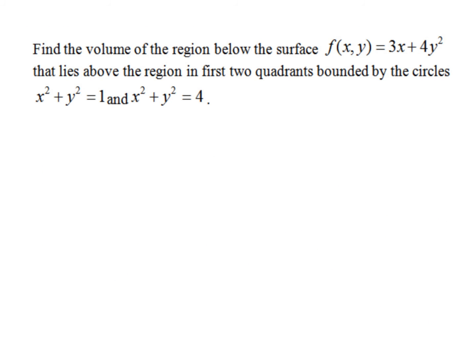Let's set up one more. All right. So we're going to find the volume that is below this surface that I gave you, 3x plus 4y squared. The lie is above that. Okay. So it's above that region. And notice, I just said the first two quadrants bounded by the circles, x squared plus y squared is 1 and x squared plus y squared.